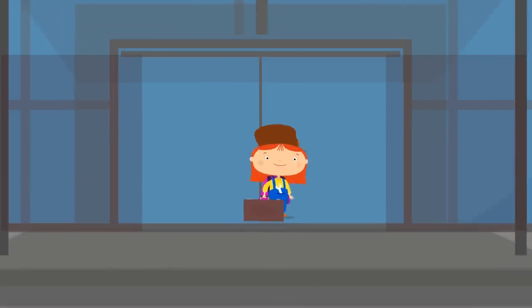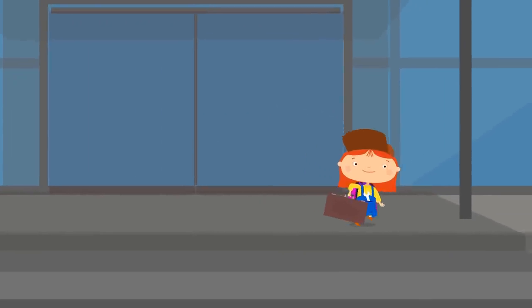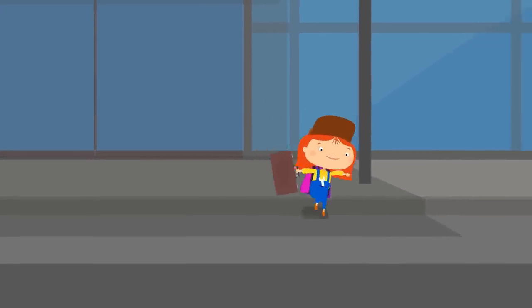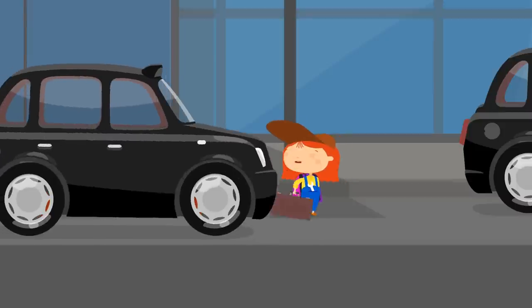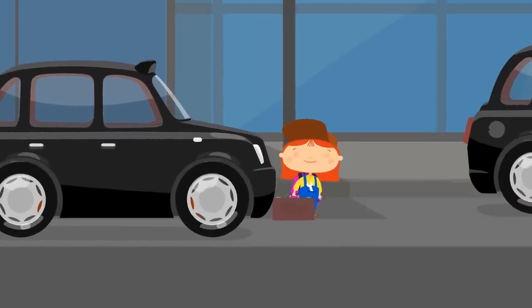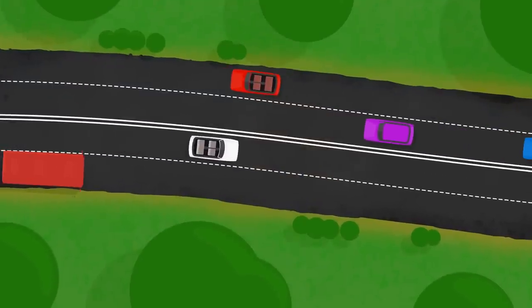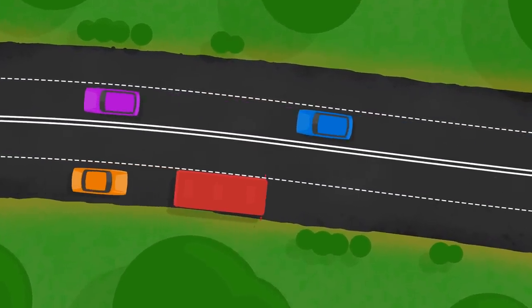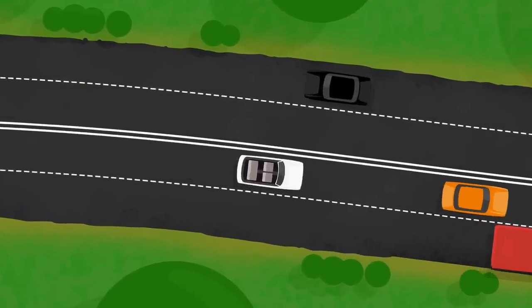Now she's crossing the road to get on the sightseeing bus. Before you cross the road, you need to look to the left. Oh! Why did this car come from the right? Dr. McWheely did not expect this. Why did it do that? And then she realized.